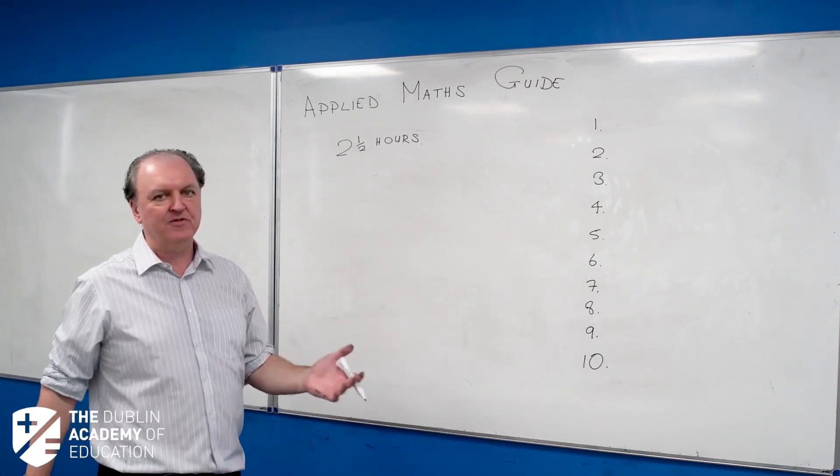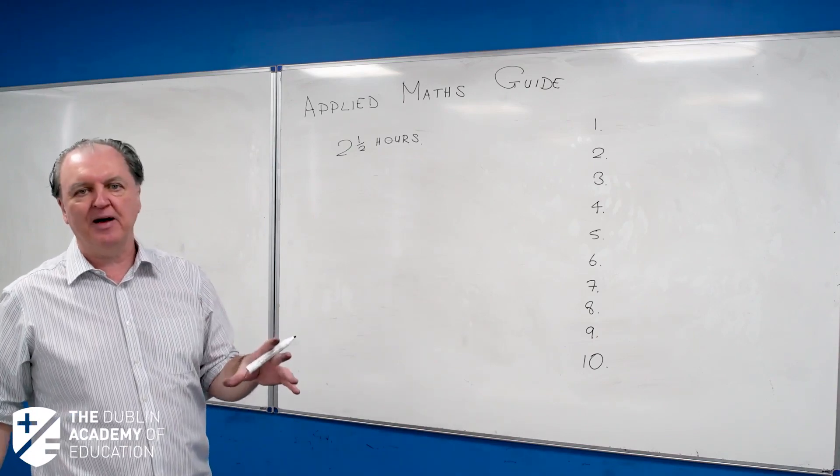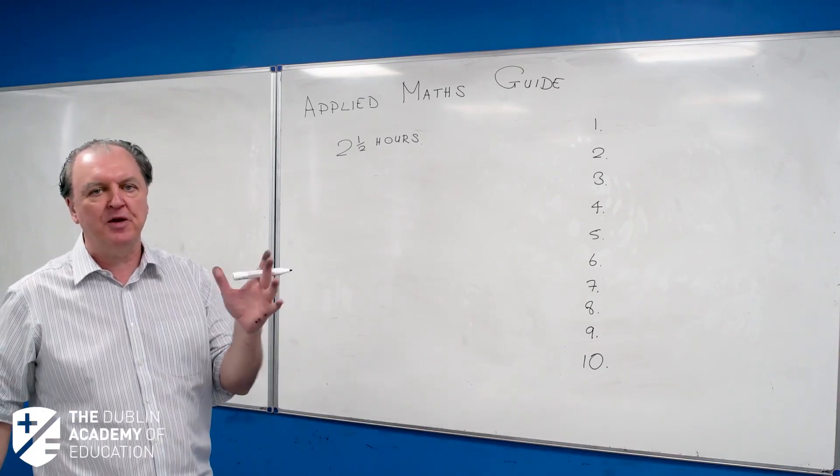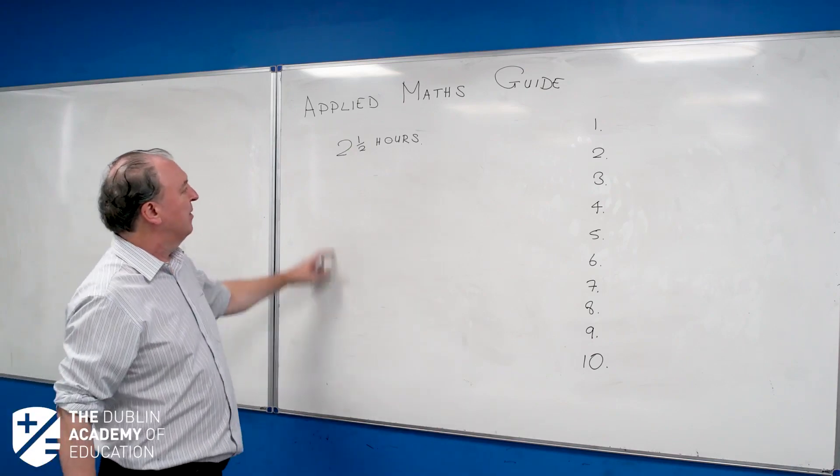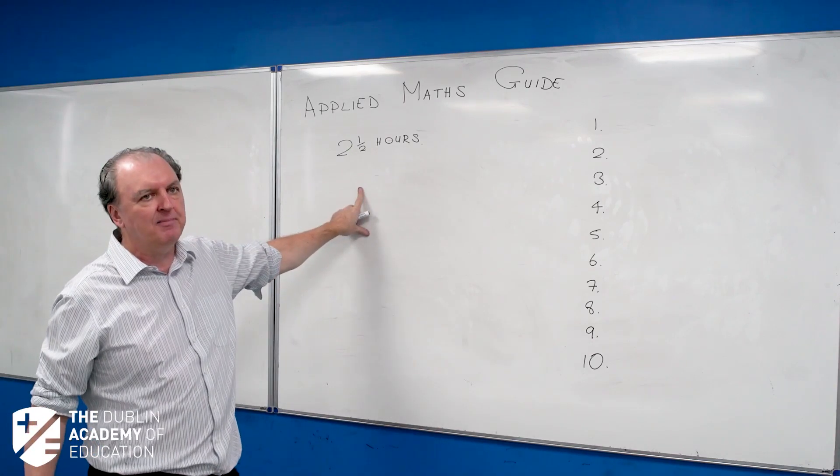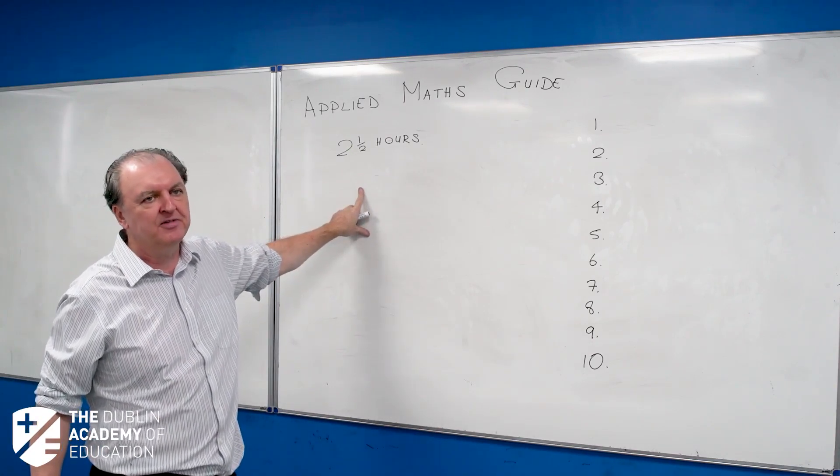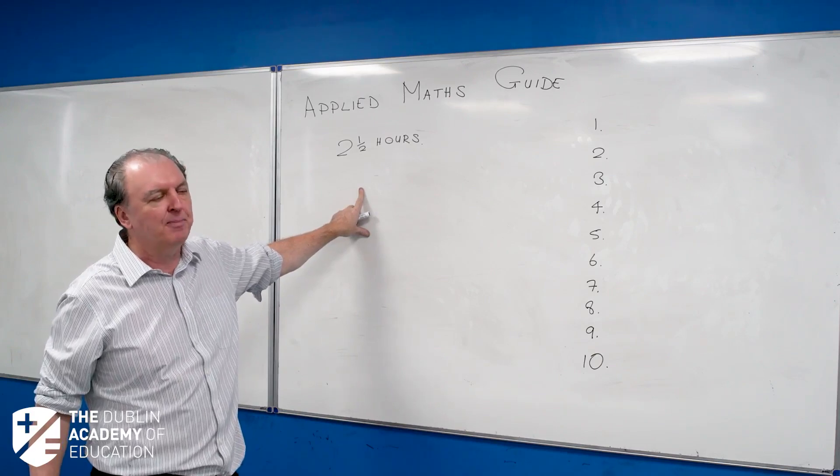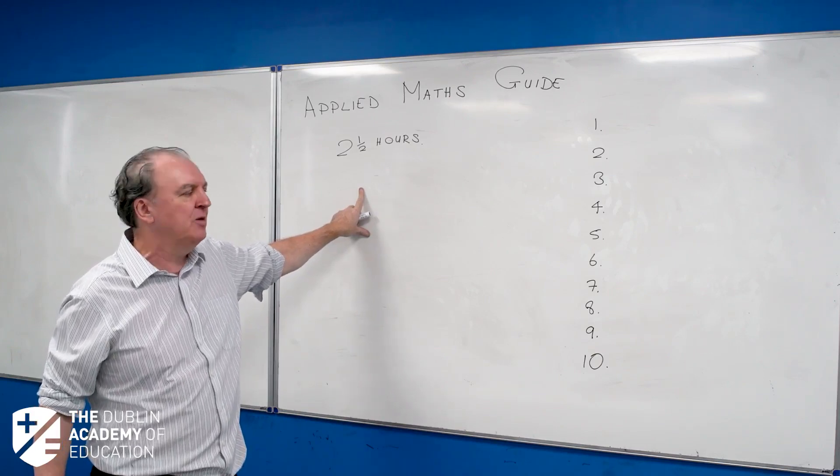We have three hours for physics. By and large I find that most students are comfortable enough with the time. Whereas two and a half hours for applied maths can be very tight. Students come under a lot of pressure.